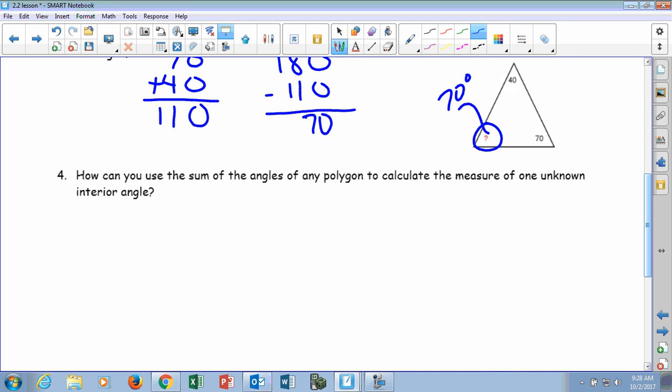So it says, how can we use the sum of the angles of any polygon to calculate the measure of one unknown interior angle? Well, again, if we're trying to use it to find a missing angle, we take our angle sum formula and divide it by the number of angles. So we know that our angle sum formula is 180 times n minus 2.